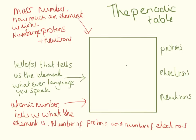Starting with carbon: the symbol is C, the mass number is 12 and the atomic number is 6. The number of protons equals the atomic number, so carbon has 6 protons. The number of electrons also equals the atomic number, so carbon has 6 electrons. Neutrons equal mass number minus atomic number: 12 minus 6, so carbon has 6 neutrons.